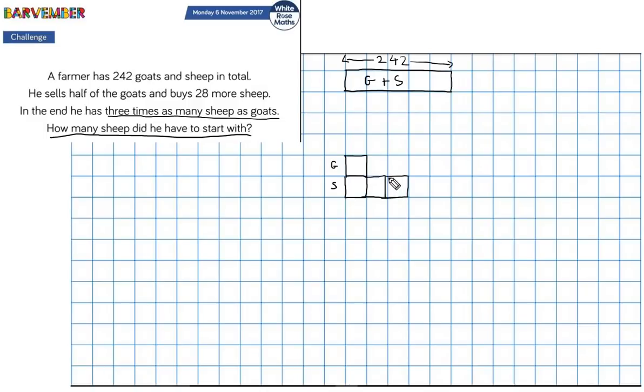And this is, actually that's terribly badly drawn. Okay, so this representing the number of sheep in the end is three times greater than the goats. So in the end, he has three times as many sheep as goats. Fantastic.